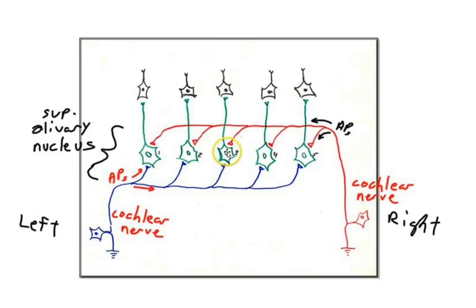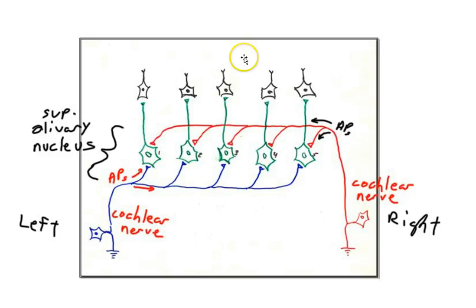Cell three fires because sufficient sodium gets in to generate its own action potential. The output of this system goes to motor neurons that orient your head toward the sound — in this case, keeping you facing forward. Even though action potentials continue past cell three to the remaining cells, none of those cells get simultaneous activity in both inputs, so they do not fire. Only cell three fires when the sound is directly in front.